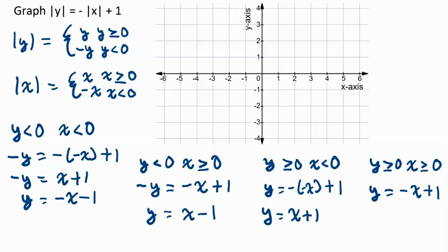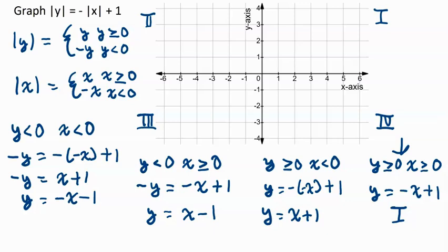We now have a coordinate plane and we can label the quadrants: first, second, third, and fourth. In the first quadrant, y and x are both greater than or equal to 0, so we use y equals negative x plus 1. The graph does not extend past this region because the condition only holds when y is greater than or equal to 0 and x is greater than or equal to 0.